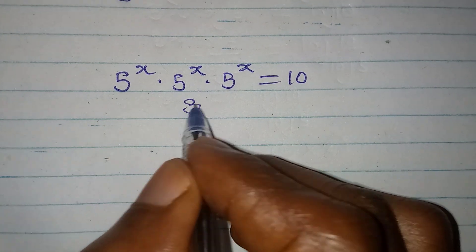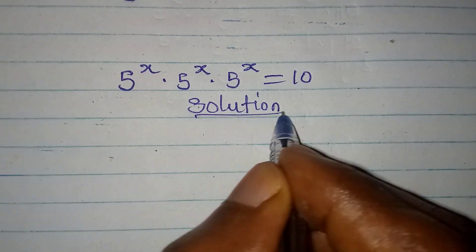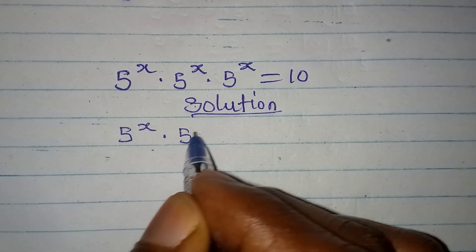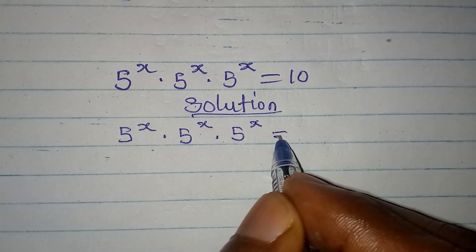Hello everyone, let's provide a solution to this problem. 5 to the power of x multiplied by 5 to the power of x by 5 to the power of x equals 10.